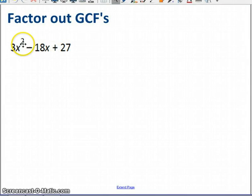The first situation is what I've labeled step 1 here, pulling out or factoring out the greatest common factors. So here's an example: 3x² - 18x + 27. Each of the three terms has something in common.